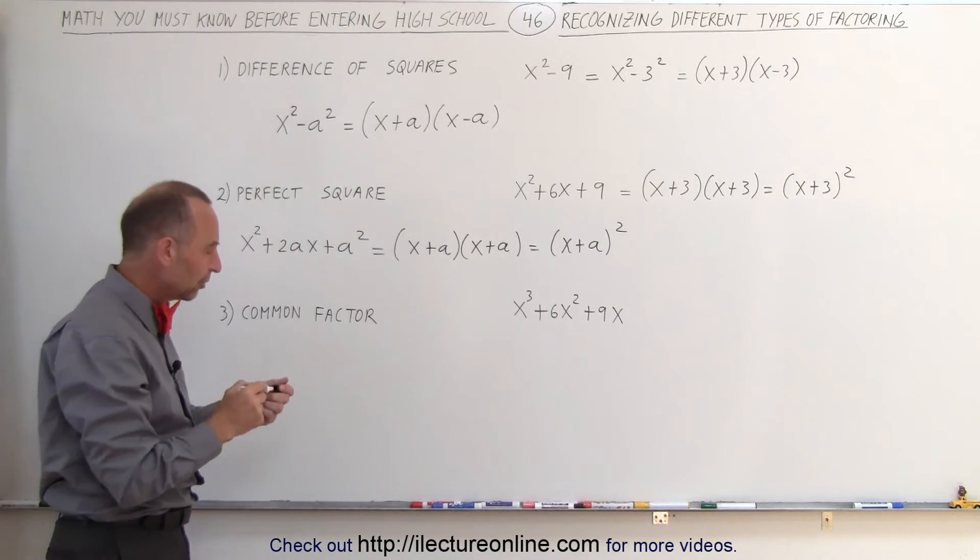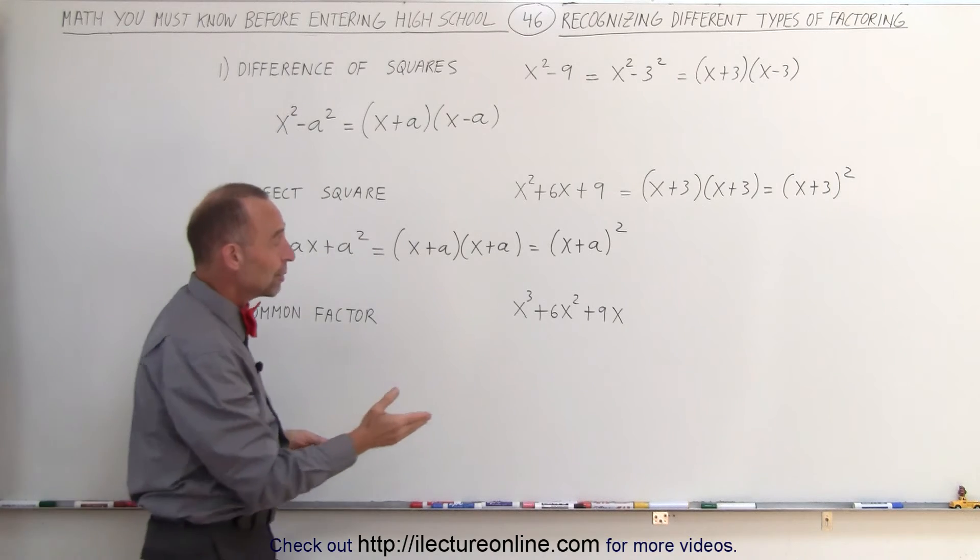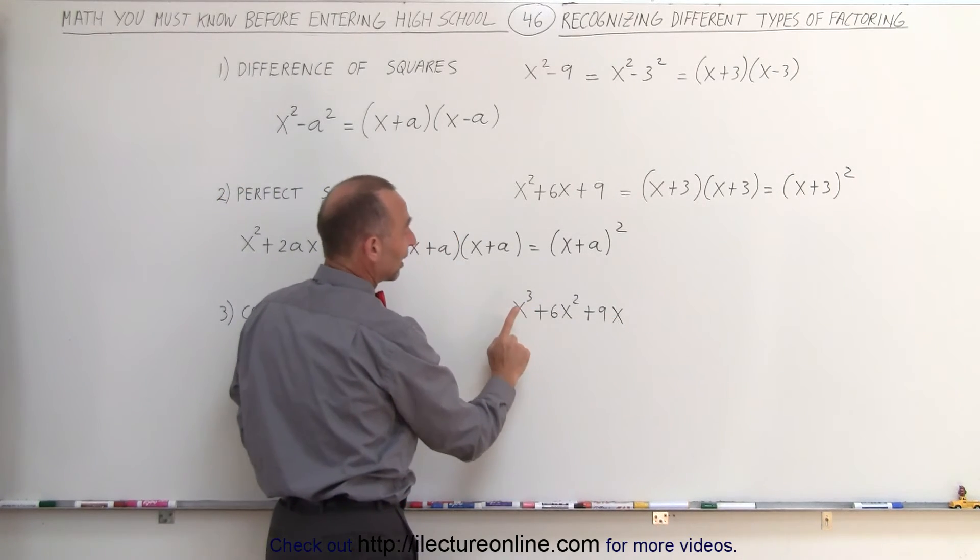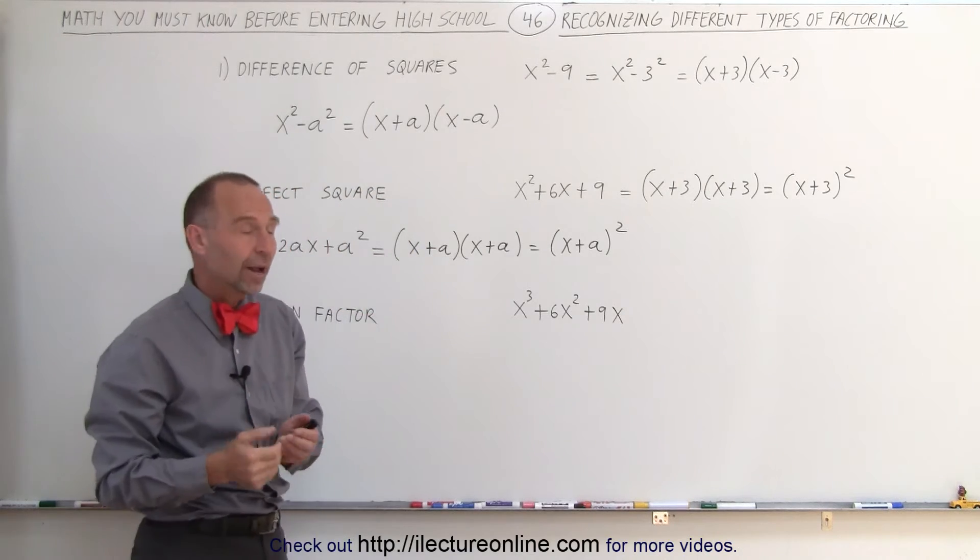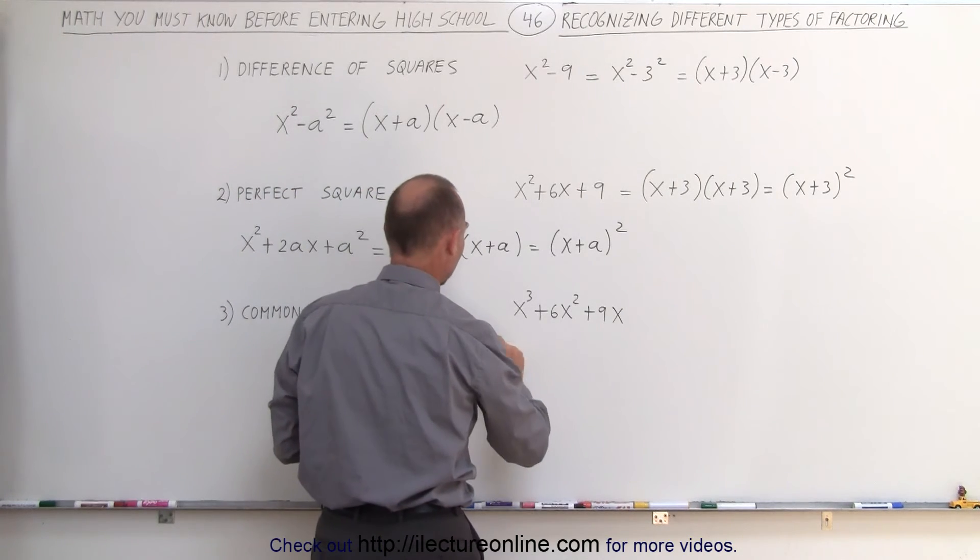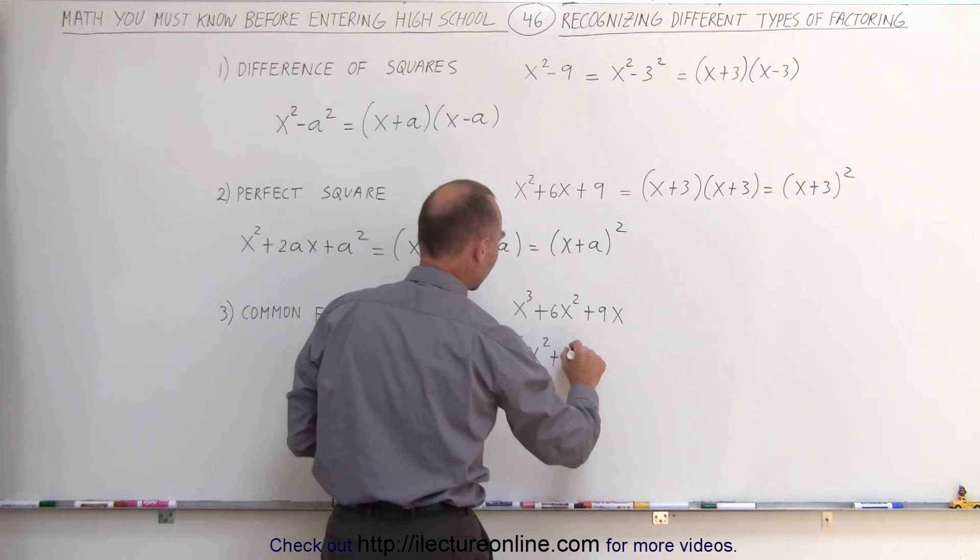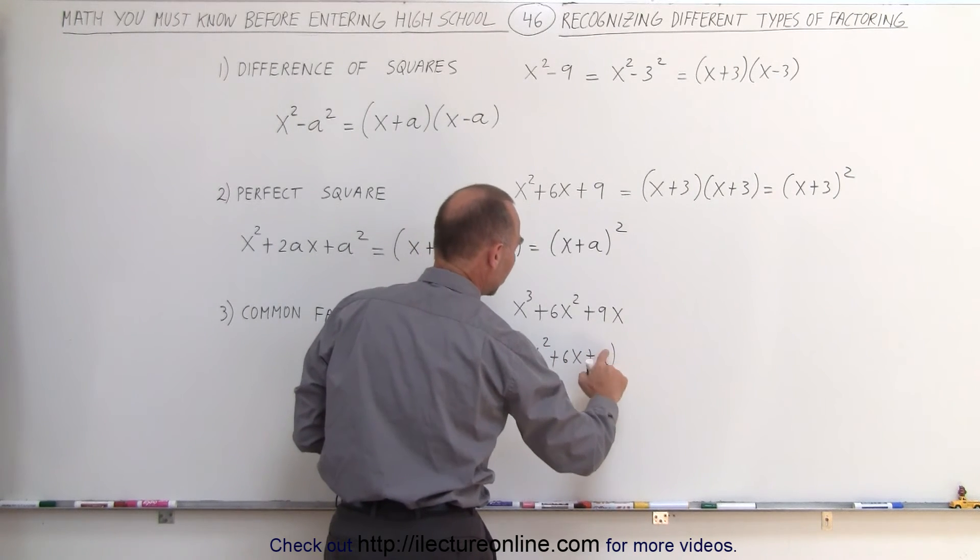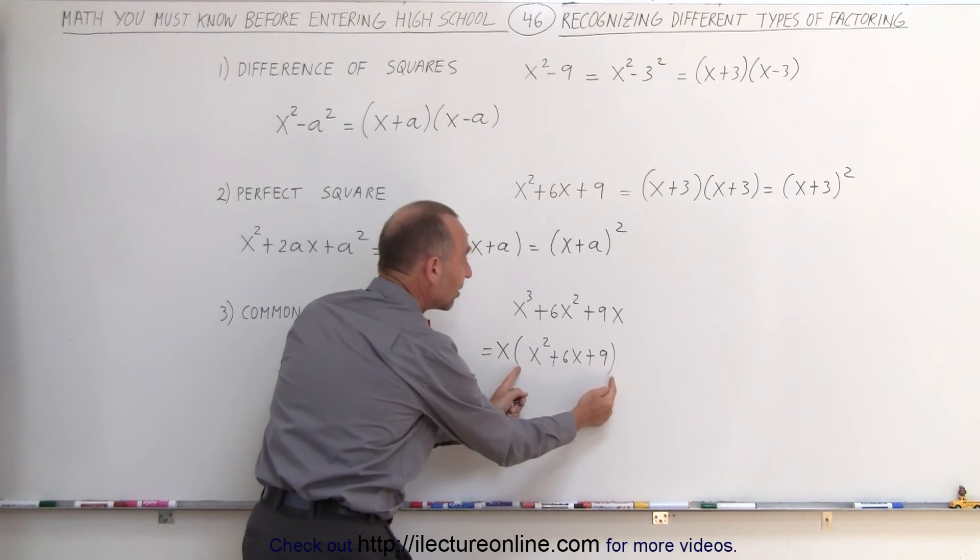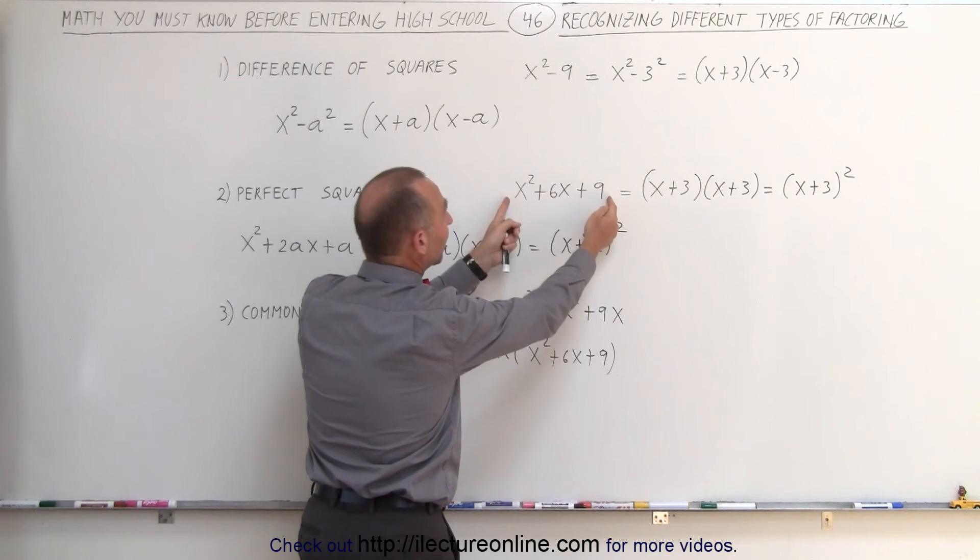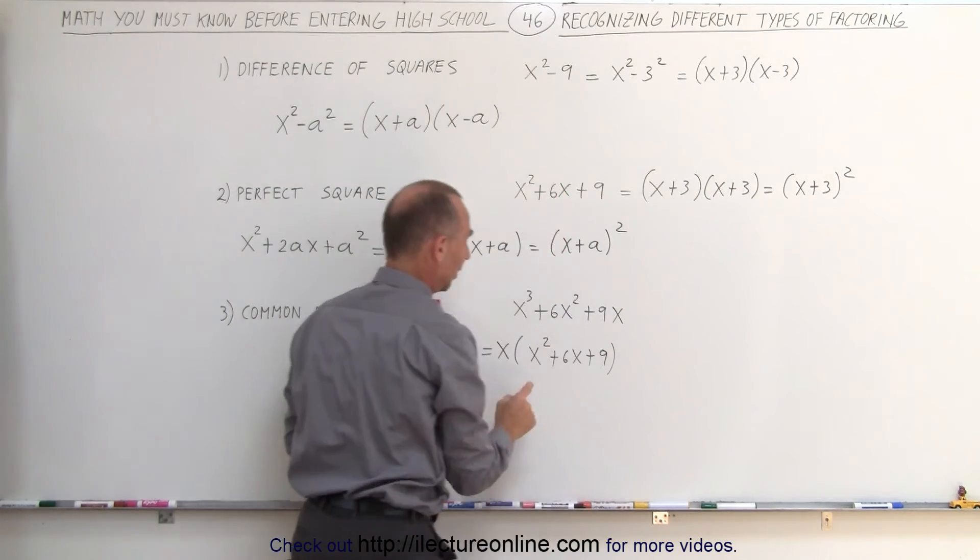And finally, you may end up with something that has a common factor already built in. Again, here you have a trinomial, but notice that each term has an x in it that you can factor out. When you do that, you can write it as x times x squared plus 6x plus 9. And now you see that what's in the parentheses here is exactly the same as what we have over there, which means you can factor this exactly the way you did over there, but you still have the x there that you factored out.